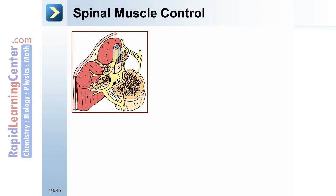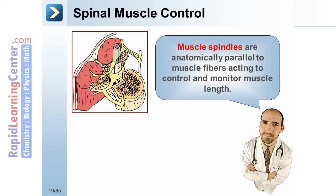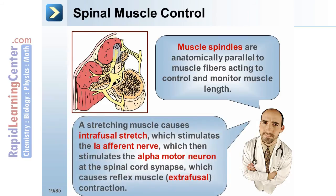While on the topic of spinal control of muscle, we need to discuss spinal muscle control. Muscle spindles are anatomically parallel to muscle fibers, acting to control and monitor muscle length. A stretching muscle causes intrafusal stretch, which stimulates the IA afferent nerve, which then stimulates the alpha motor neuron at the spinal cord synapse, causing reflex muscle, or extrafusal, contraction.